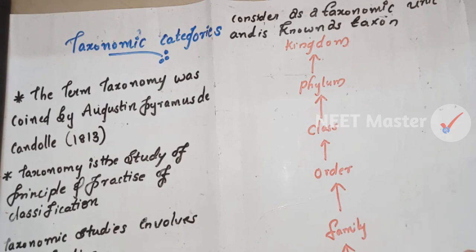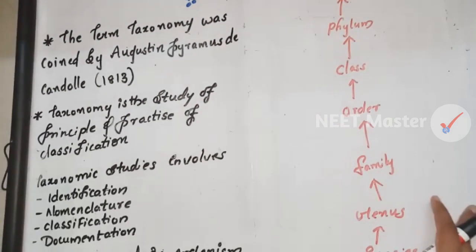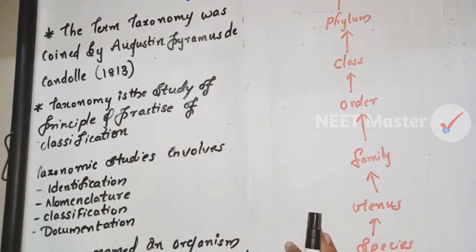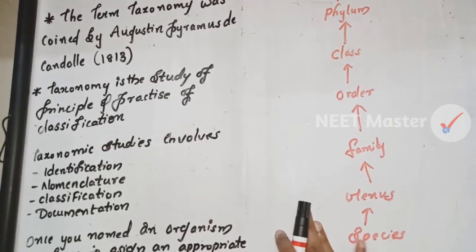What is the name of Taxonomy? This term is the name of Taxonomy, named after Augustine Pyramus de Candolle. He was a scientist in 1813. We are going to study this name of Taxonomy.